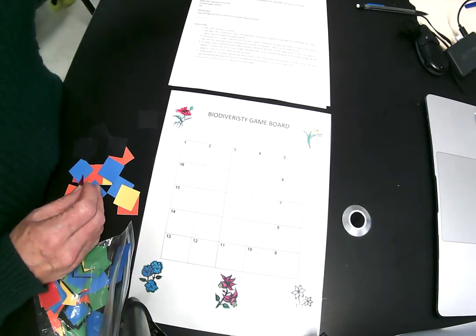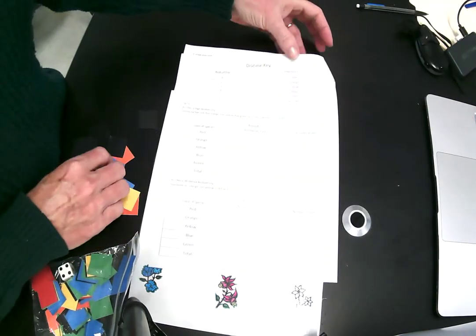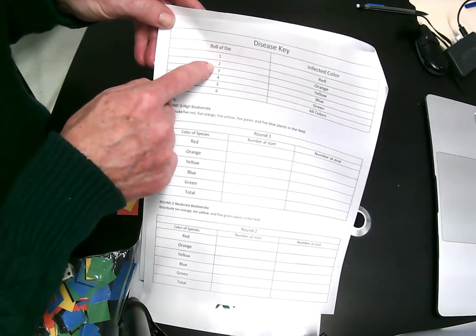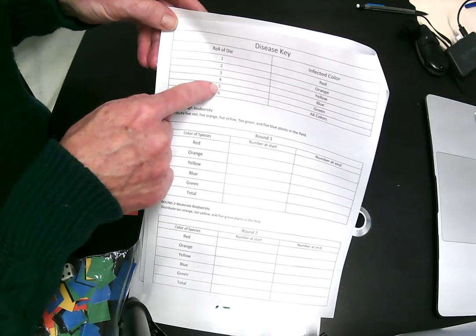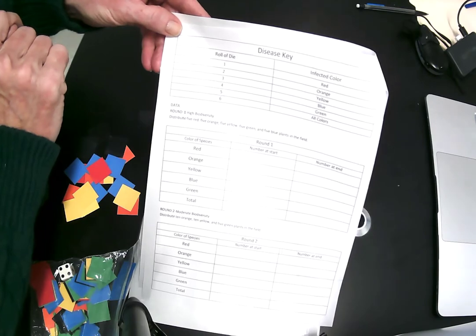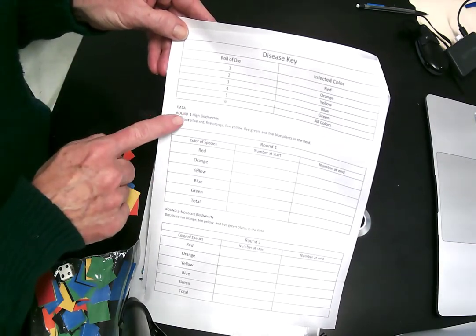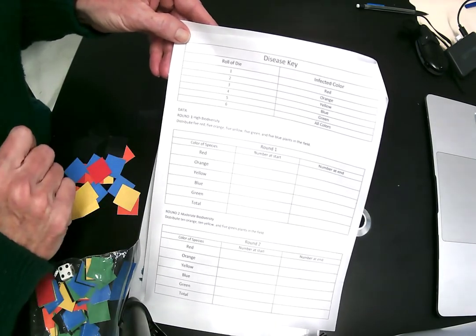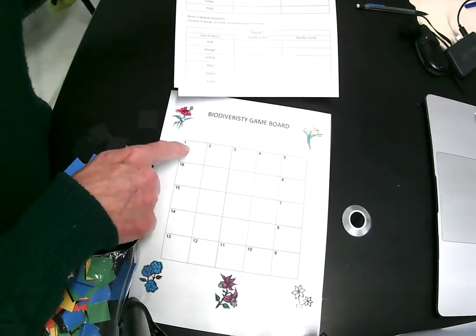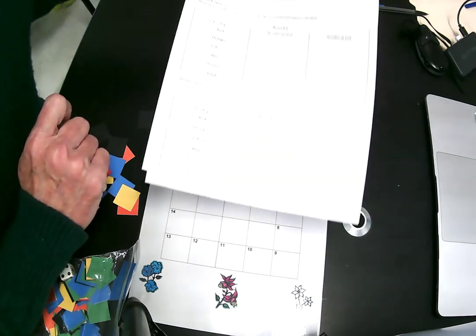So you're going to actually play four rounds of this game and on the second page of your handout, it has a key for which number on the die will kill which flower color. Okay, so for each round, and you're going to do four different rounds, there are instructions on which flowers are growing in the field. And you will do a die roll for each square. Okay, so here's how it's going to look.